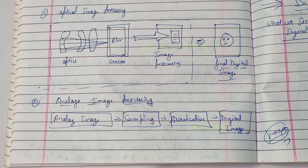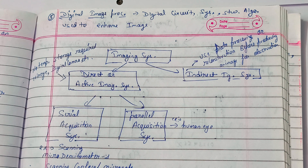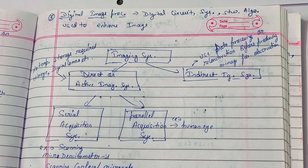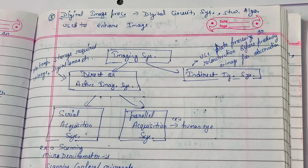Now let's see digital image processing. In digital image processing, there is a digital circuit system, data circuit system, and software used to enhance the image. As our subject is digital image processing, you already know there are algorithms, digital circuits, and different software working to enhance the image. A digital image is one captured by an optical device like a camera, on which sampling and quantization have been applied, and it has been converted into a digital image system.